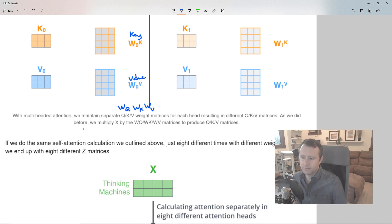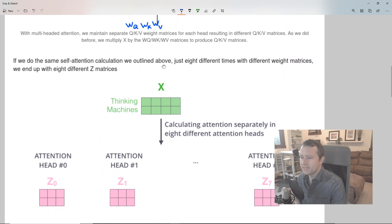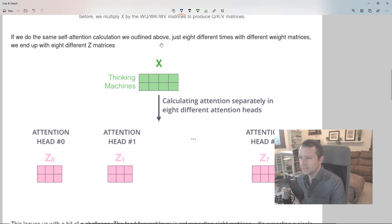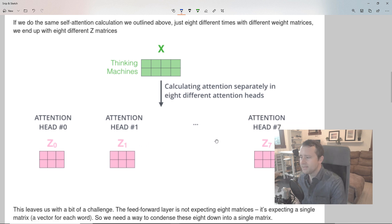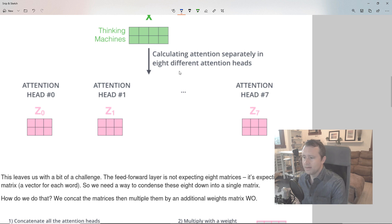So as we did before, we multiply X, the embeddings, by these projection matrices, and then that produces our query, key, vector matrices. If we do the same self-attention calculation we outlined above, just eight different times with different weight matrices, we end up with eight different Z matrices. So start with the embedding vectors, run through each of the eight attention heads, and we end up with eight of these Z matrices.